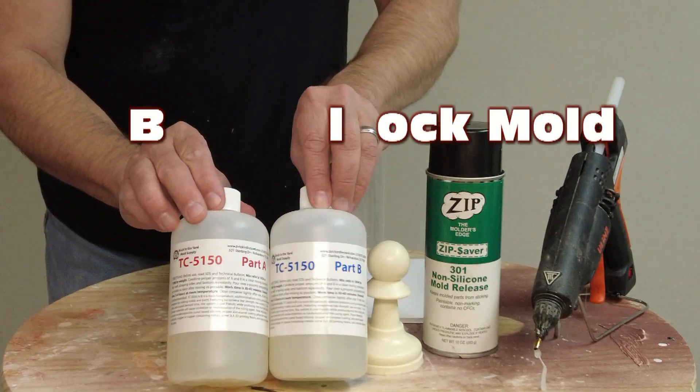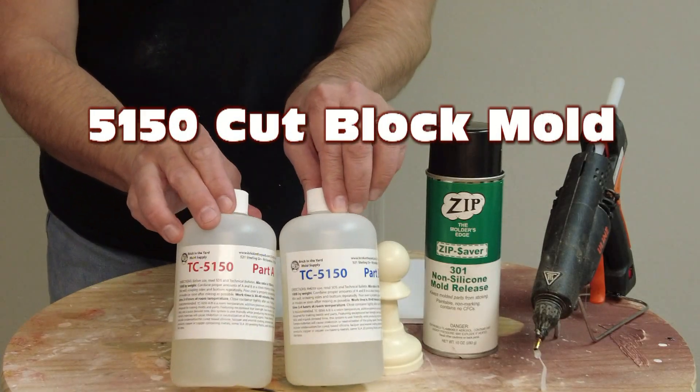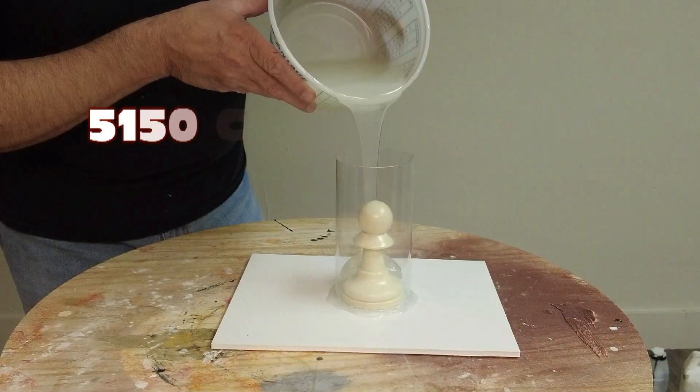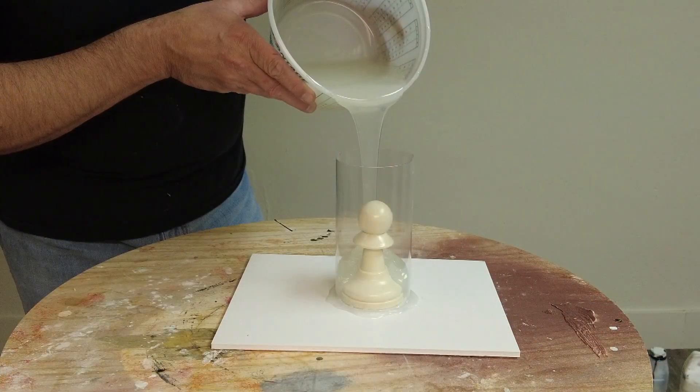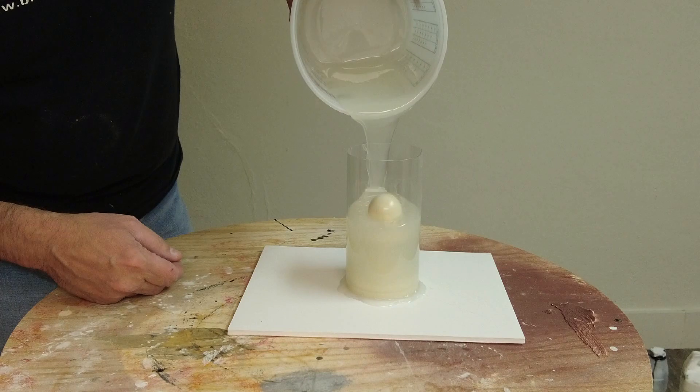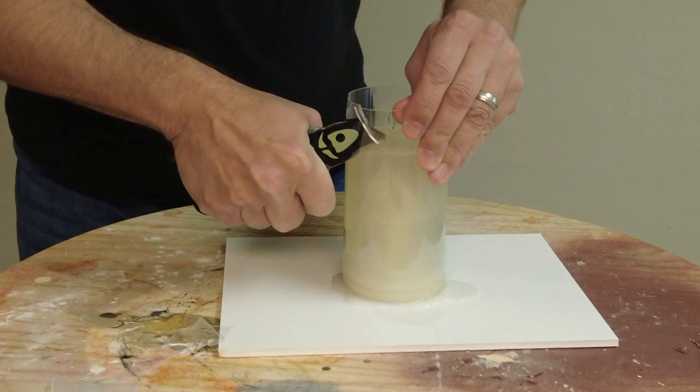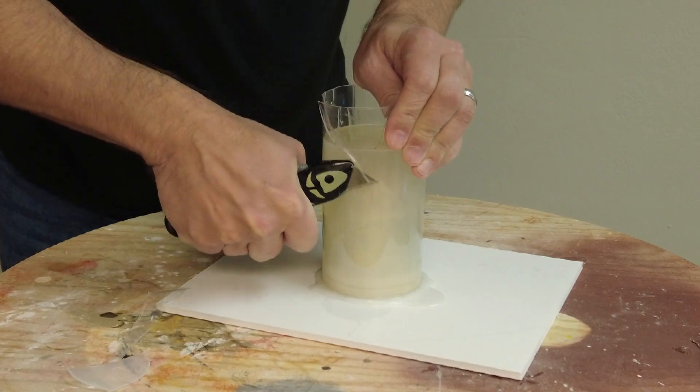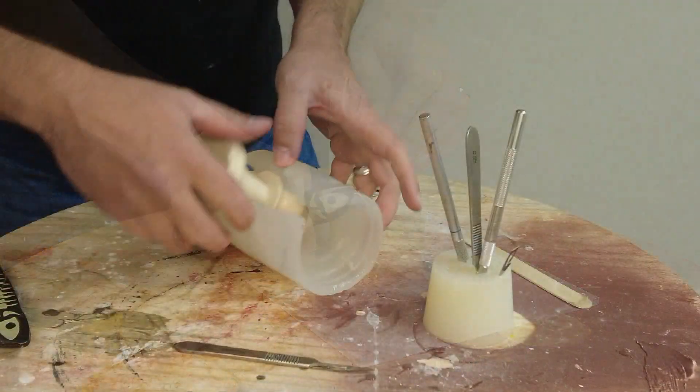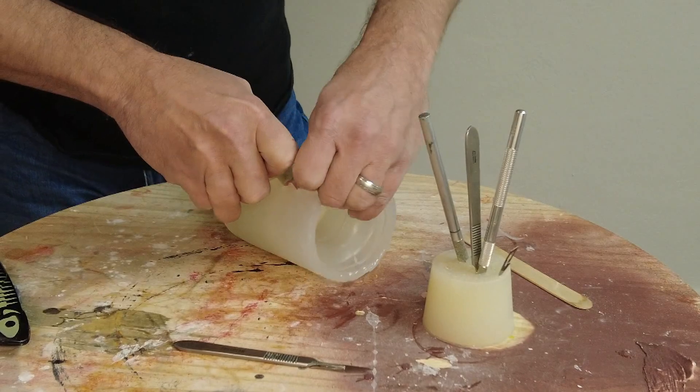In today's tutorial we're going to make a cut block mold using 5150 silicone. Now 5150 is a platinum system, a one-to-one mix ratio 50 Shore A platinum silicone that's great for making these really firm cut block molds like this.